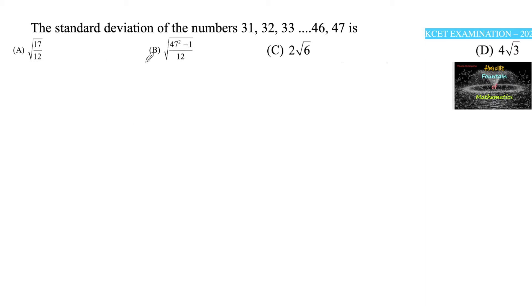The standard deviation of the numbers 31, 32, 33, and so on 46, 47. The given sequence of numbers is an arithmetic progression whose first term a is 31 and common difference d is equal to 32 minus 31, that's 1.